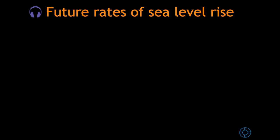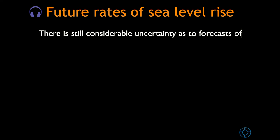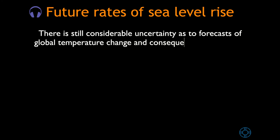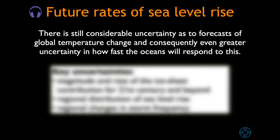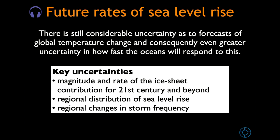About the future rates of sea level rise, there is still considerable uncertainty as to the forecast of global temperature change, and consequently even greater uncertainty in how fast the oceans will respond. There are three key uncertainties: the first is the magnitude and rate of ice sheet contribution for the 21st century and beyond; the second key uncertainty is the regional distribution of sea level rise; and the third key uncertainty is the regional changes in storm frequency.